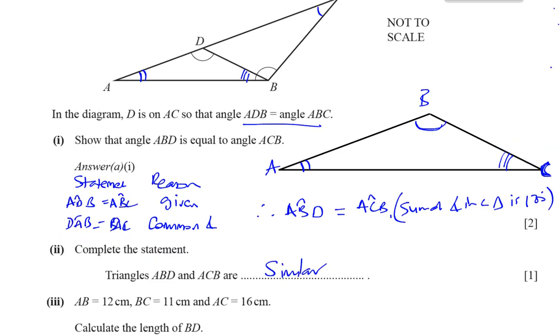Now, the next part says AB is equal to 12, so I'll put that here, 12 centimeters. And BC is equal to 11 centimeters. And AC is equal to 16 centimeters. Calculate the length of BD. Let me call that X.